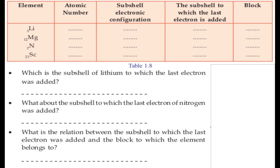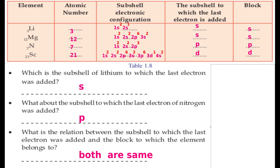Let us see how we can determine the block of an element from its sub-shell electronic configuration. For lithium, the last electron was added to the s sub-shell, so its block is s. Similarly, magnesium's last electron goes to the s sub-shell, so its block is s. For nitrogen, the last electron goes to the p sub-shell, so its block is p. The block of an element is determined by which sub-shell the last electron enters.